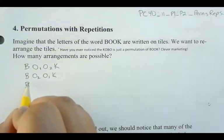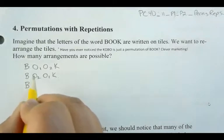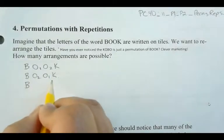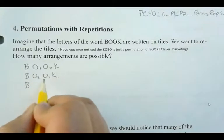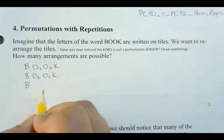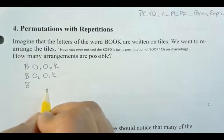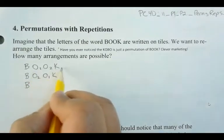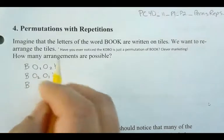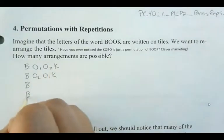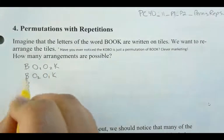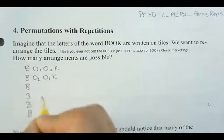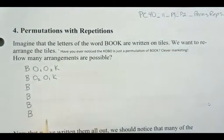I'm going to stick with B in the first position, and then try to rearrange the remaining three letters as many different ways as possible. How many different ways can I rearrange these three letters? Six different ways — that's like three factorial, because I can swap the spots. So I'm going to have six different words that start with B.